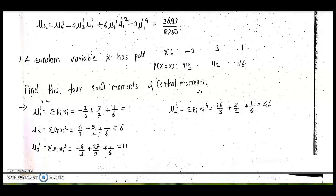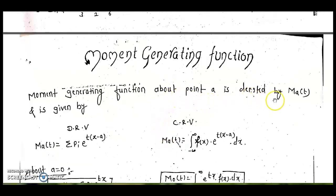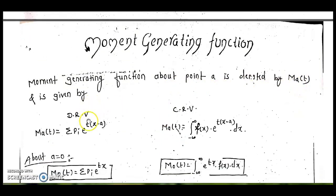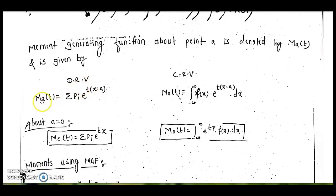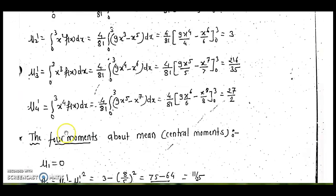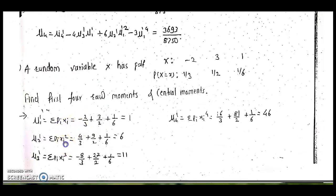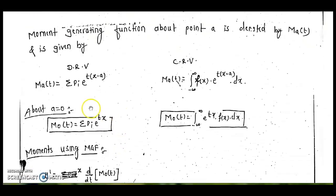Now we move to the moment generating function (MGF). The MGF about a point a is denoted M_a(t). There are two formulas: for a discrete random variable, M_a(t) = Σp_i * e^(t(x−a)); for continuous, the function is multiplied by the same exponential term and integrated. Notice that in raw moments, x was multiplied by p, and here exponential is attached with p — easy to remember on the same line.